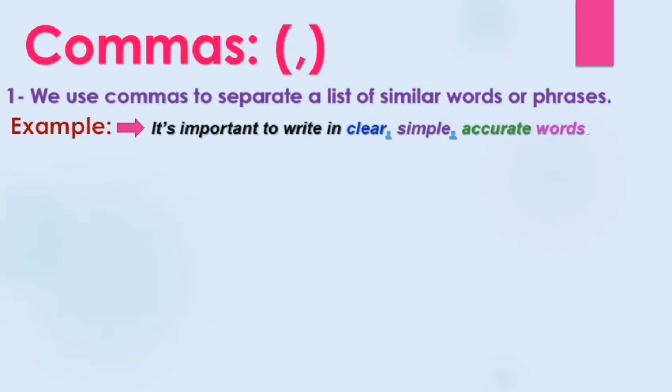The three adjectives are: clear, simple, accurate — واضحة، بسيطة، ودقيقة. So we separate them by using commas — فصلنا بينهم باستخدام الفاصلة.